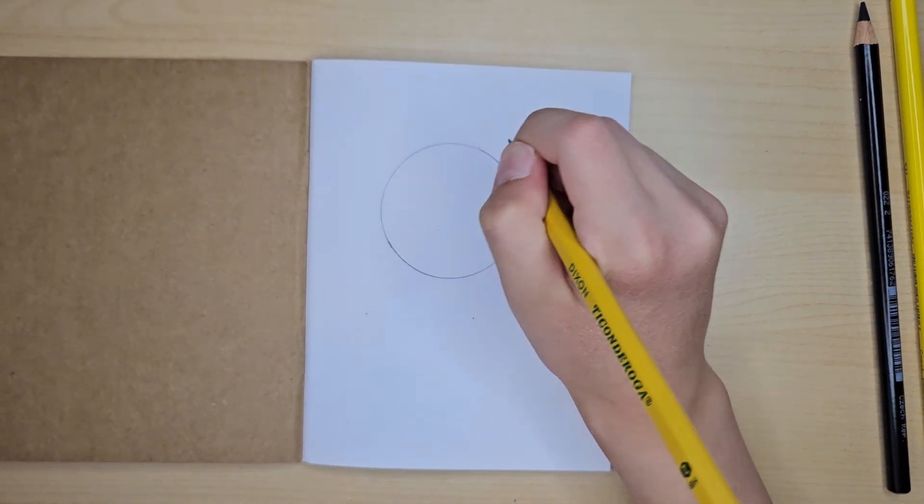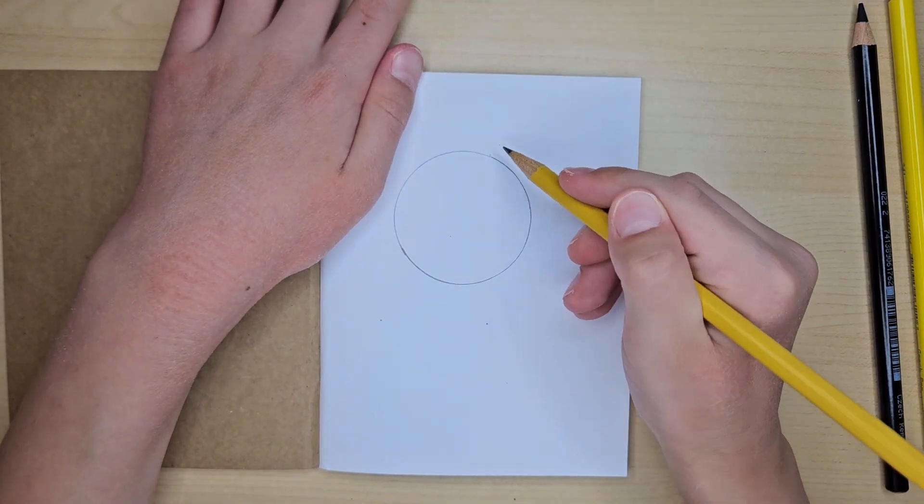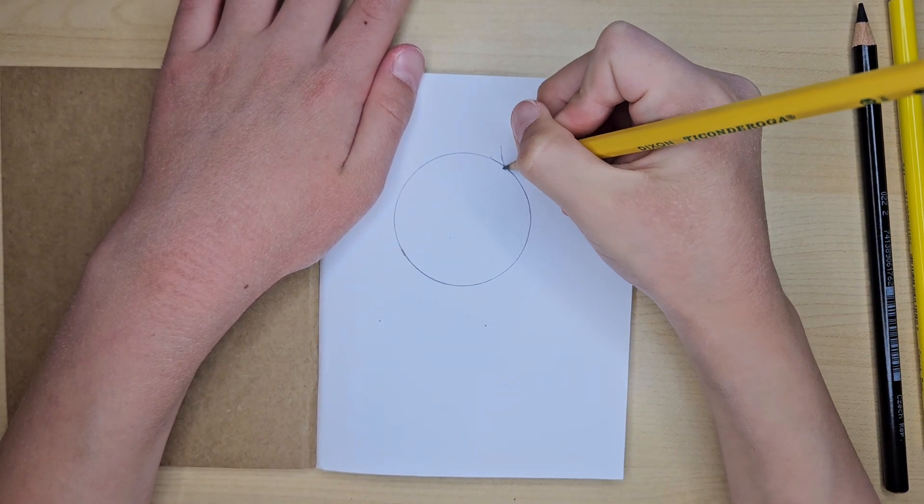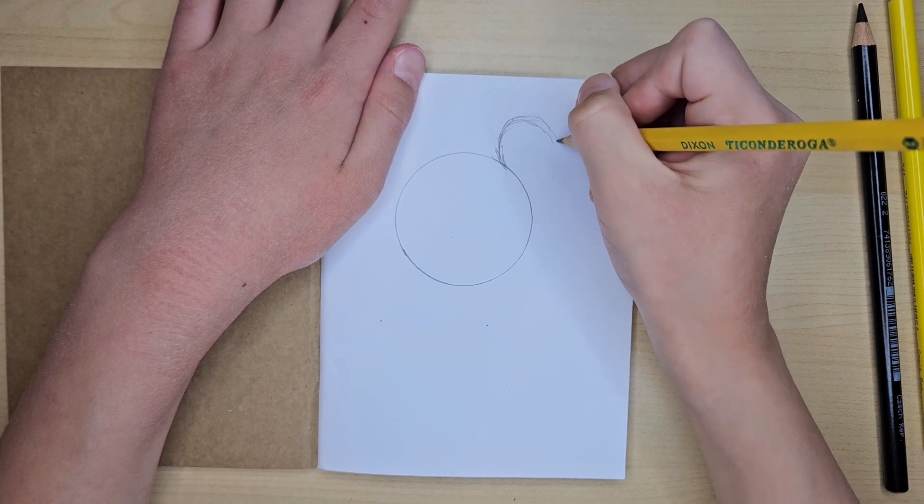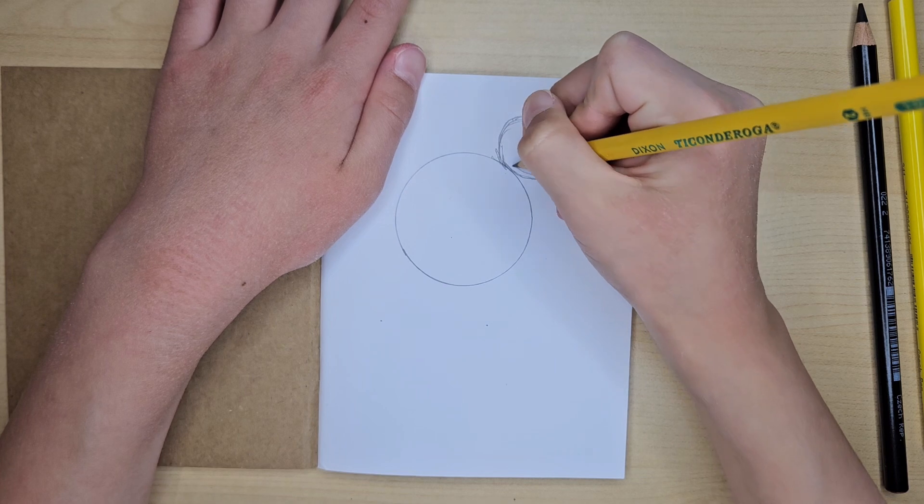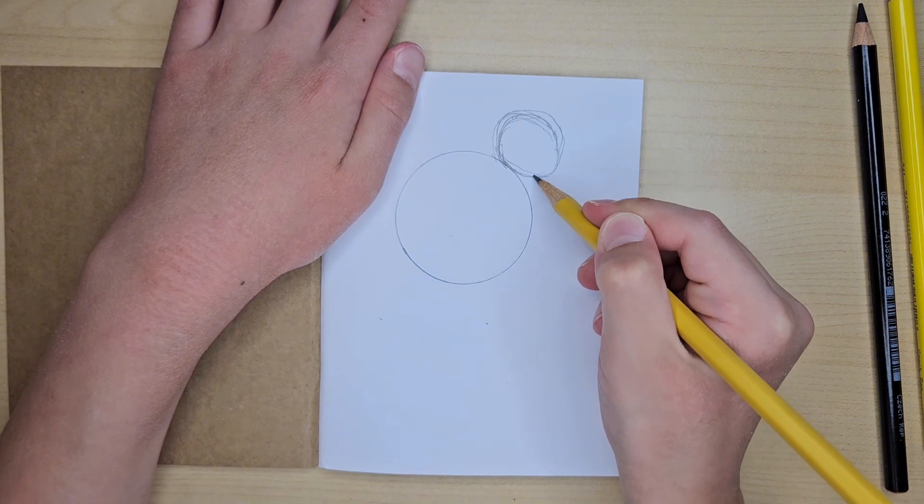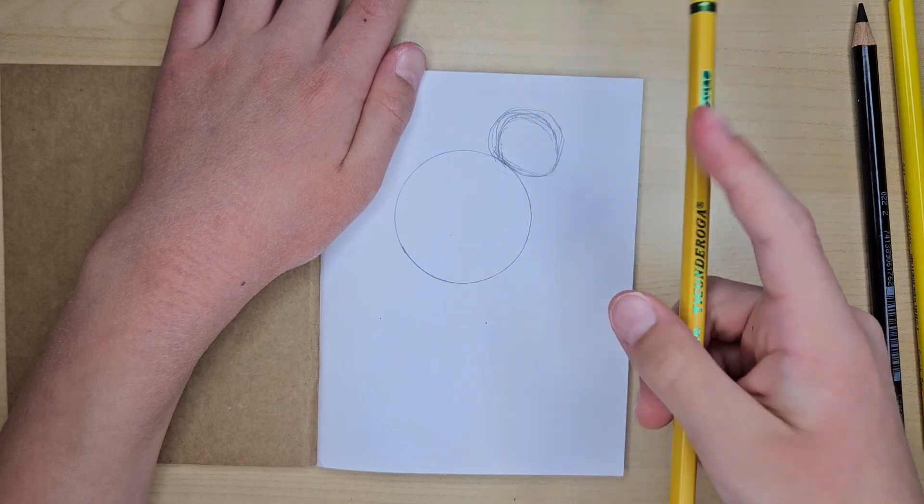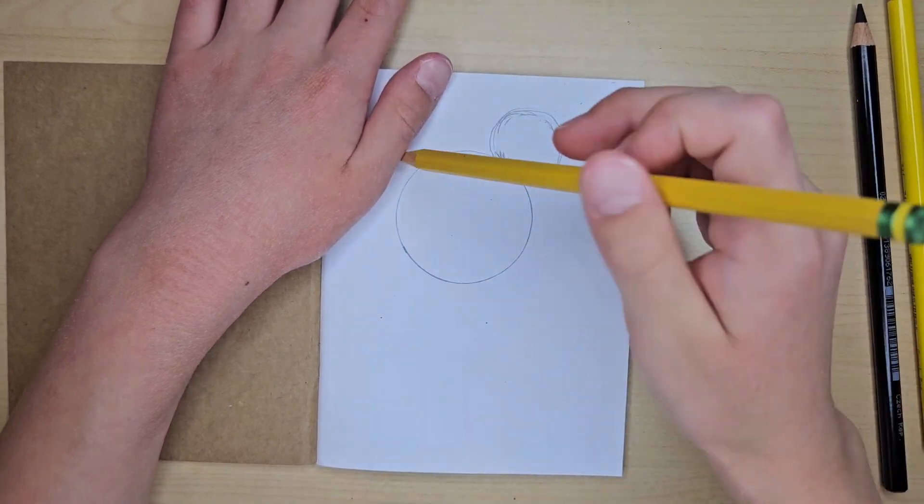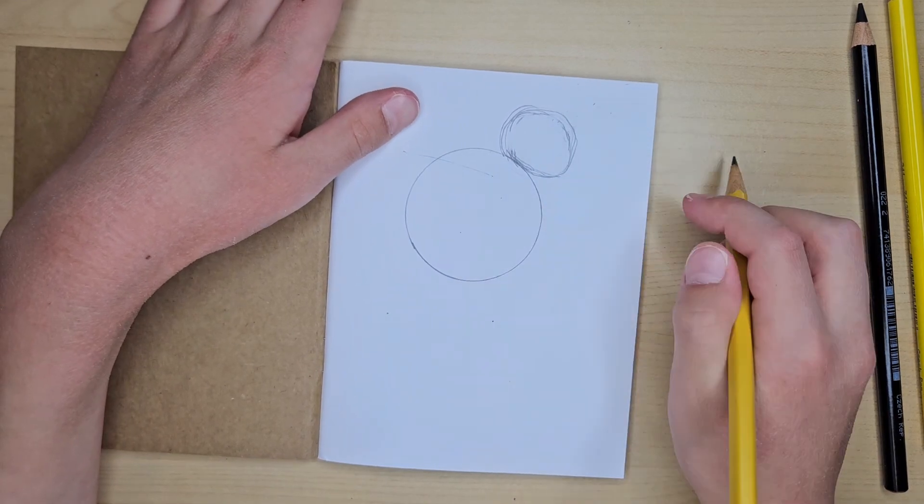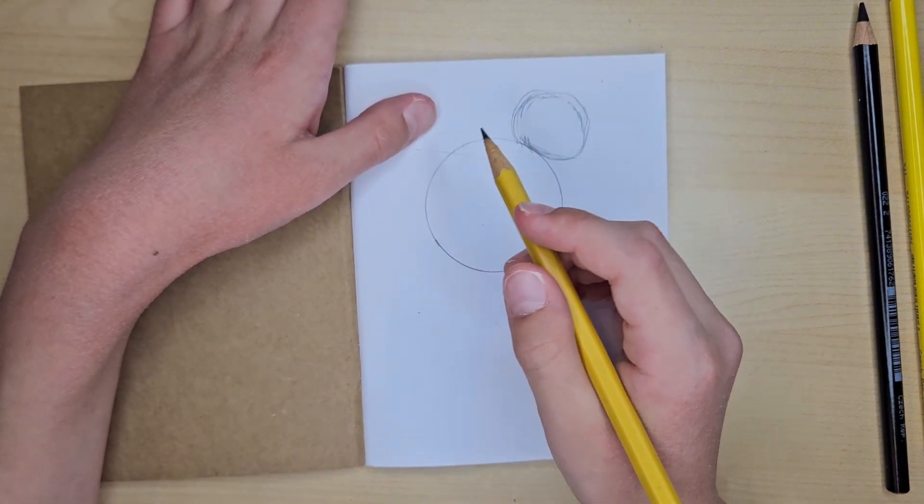Next step we have to draw the ears, which are circles too, but smaller circles are easier to draw. We're going to go on the edge here and kind of sketch out a little circle. It doesn't matter how big it has to be, just make that circle, a rough draft. It doesn't really matter, just make it as best as you can.